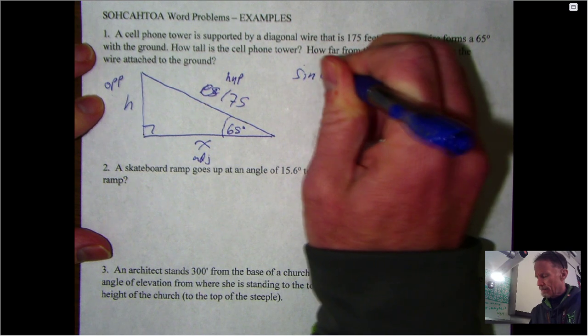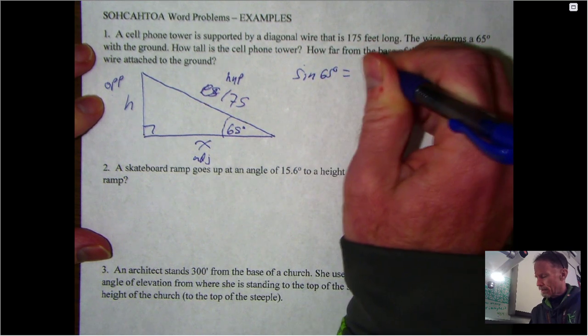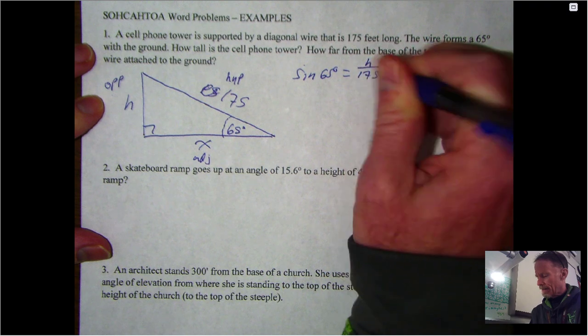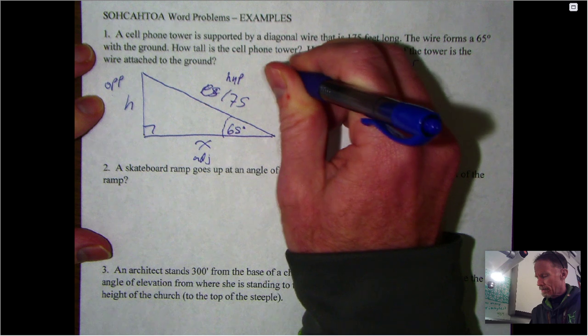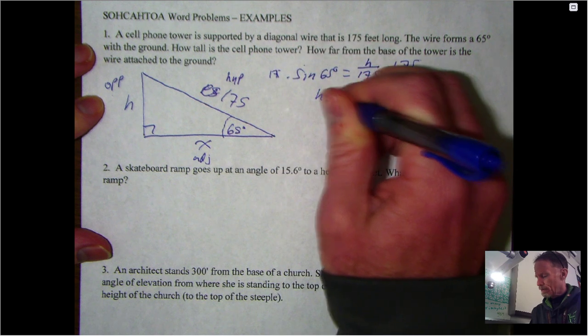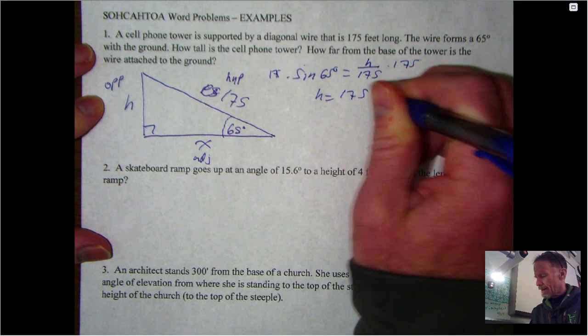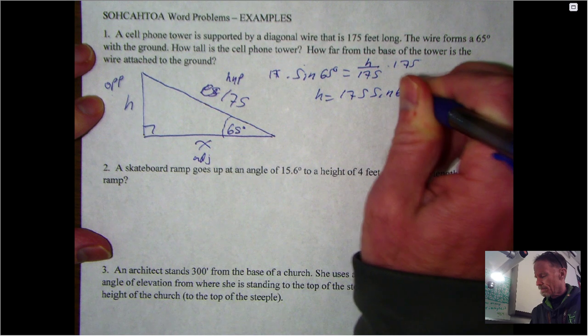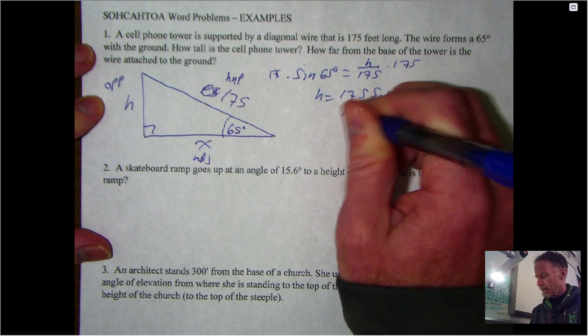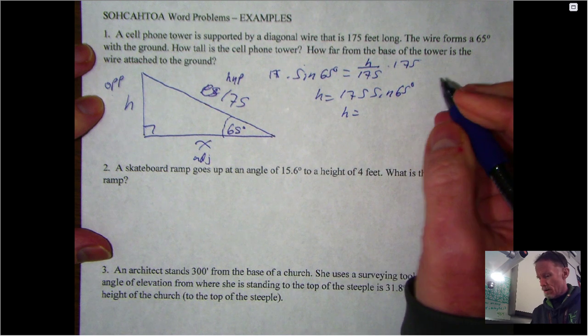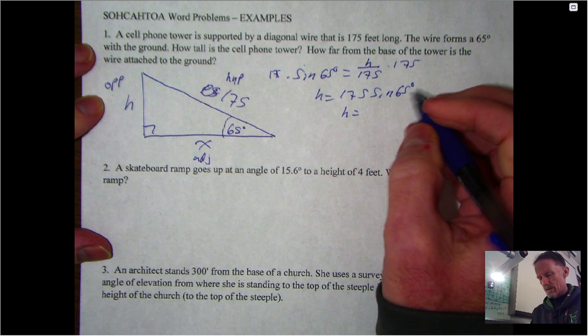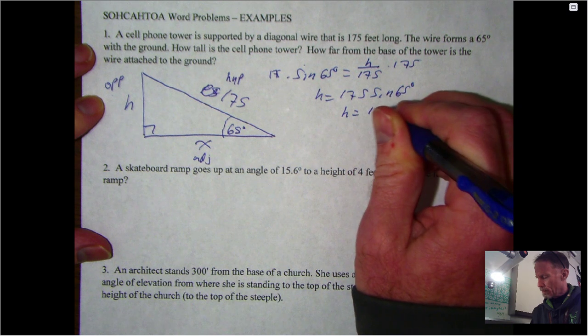So the sine of 65 degrees would be h over 175. That's a multiplying question. Multiply both sides by 175, so h is 175 sine 65. You pop that in your calculator, make sure your calculator's in degrees - change the mode if you need to - and you should get 158.60 feet.